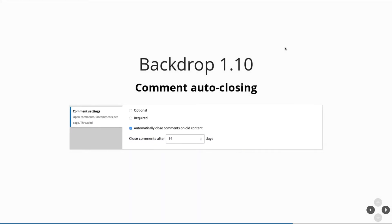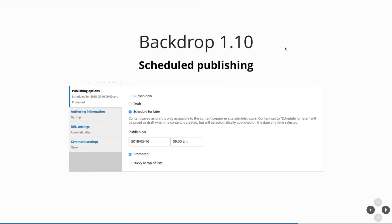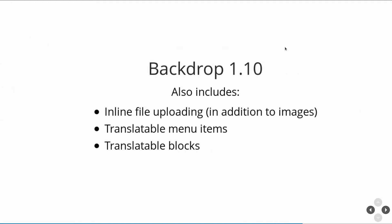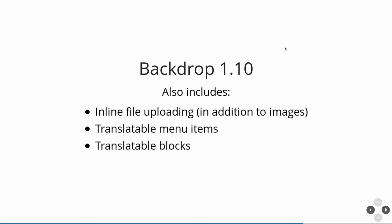In May, Backdrop 1.10 came out. It includes the comment closer module — something that comes in WordPress core — the ability to create a post and say close comments after two weeks, which prevents excess spam and decreases the need for constant moderation. We also added scheduled publishing: the ability to create a post and say publish this tomorrow morning at 6am — equivalent to the Scheduler module for Drupal 7. We included inline file uploads so instead of just dropping an image into the rich text editor you can drop in and upload a PDF link right there. Menu items and blocks became translatable, as people started using the multilingual features.